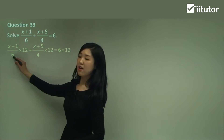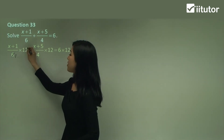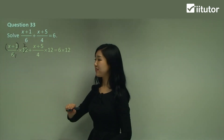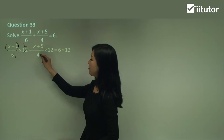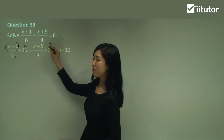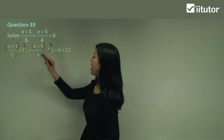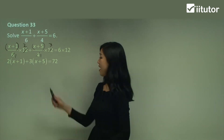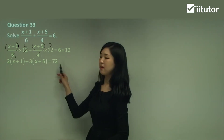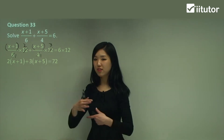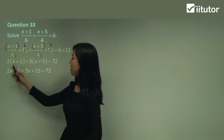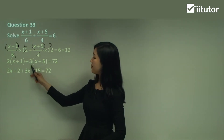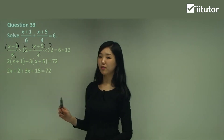So what's 12 divided by 6? That becomes a 1 and that becomes a 2. So we have 2 times (x + 1). And what's 12 divided by 4? That becomes a 1 and that becomes a 3. So we have 3 times (x + 5). So 2 times (x + 1) plus 3 times (x + 5), and this side is just 72. Now expand it all out: 2 times x is 2x, 2 times 1 is 2, 3 times x is 3x, 3 times 5 is 15, all equal to 72.